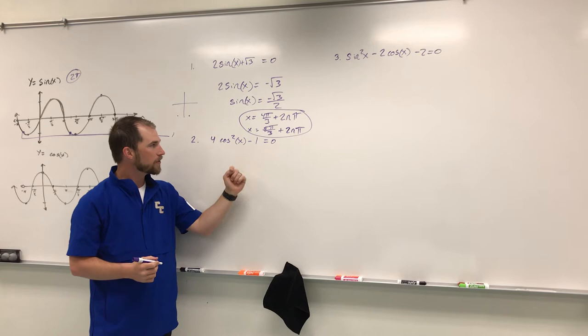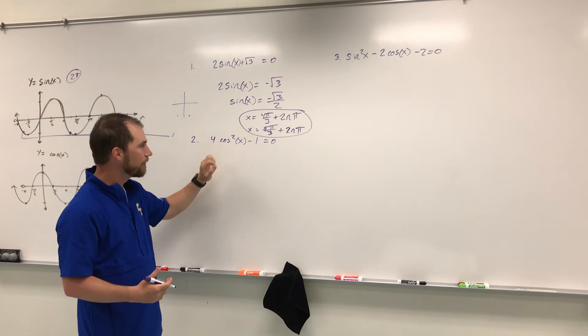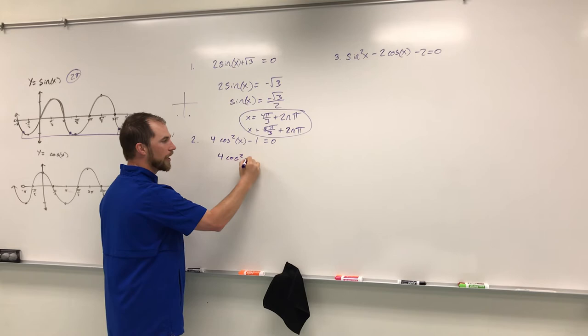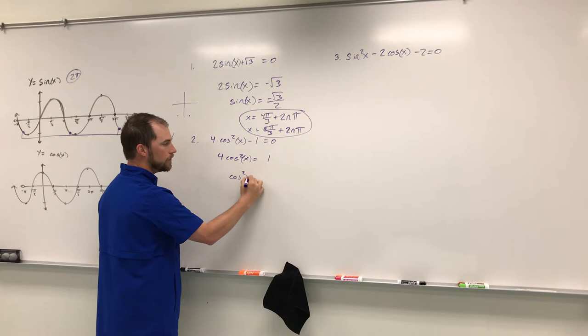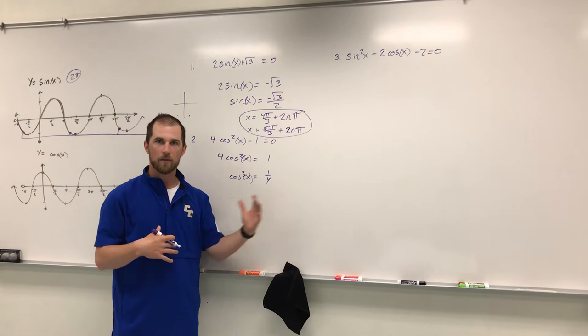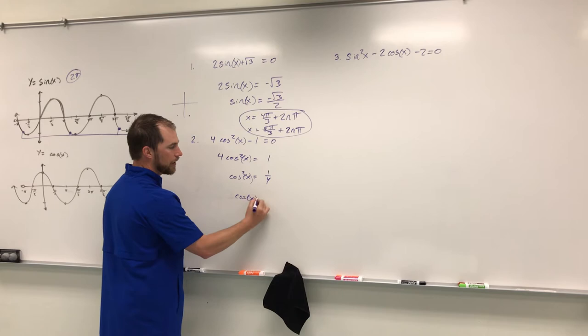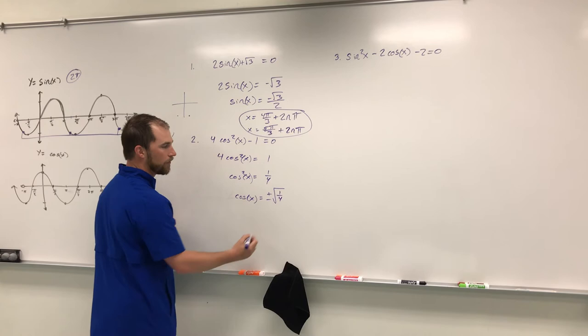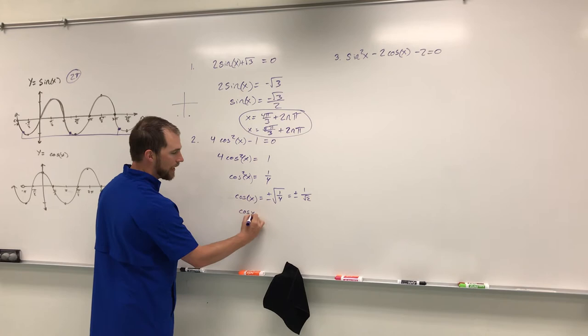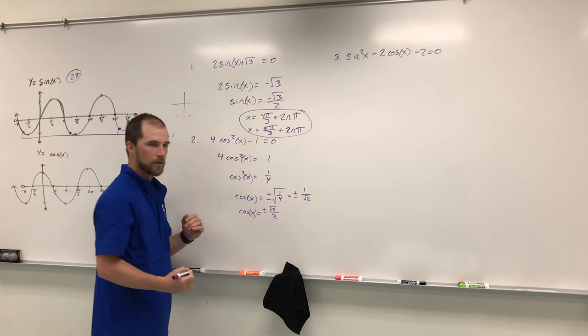The second problem: four cosine squared x minus one equals zero. We solve for cosine first by adding one to get four cosine squared x equals one, then dividing by four. To get cosine by itself we take the square root — and remember, any time we take a square root of both sides, we get a positive and negative answer. So cosine x equals plus or minus the square root of one fourth. Simplifying: the square root of one fourth is one over root two, and after rationalizing, cosine x equals plus or minus square root of two over two.